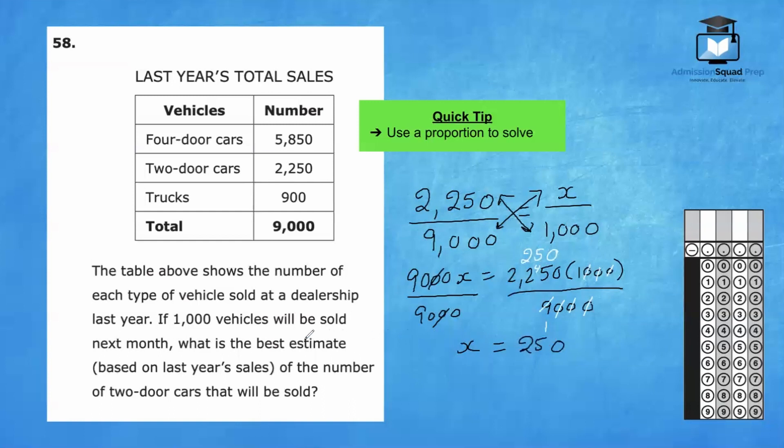If 1,000 vehicles will be sold next month, then 250 vehicles is likely going to be two-door cars. Let's enter our final answer. Since the number is positive, we will start right here in the white box. We will write a 2, then a 5, then a 0. Remember, this part is not what's going to count when you fill in your answers on the actual exam. What will count is the bubbles that you fill in. So be sure to fill in these bubbles nice and dark. Make sure you are precise in which bubbles you fill in to make sure that you get your full credit.